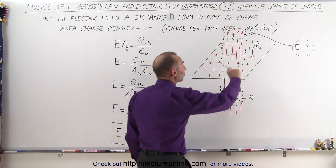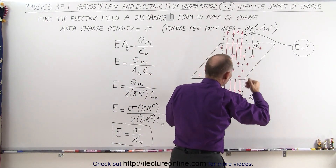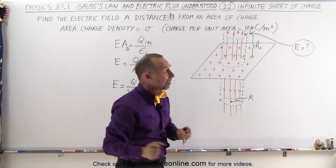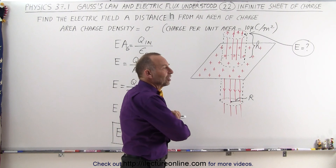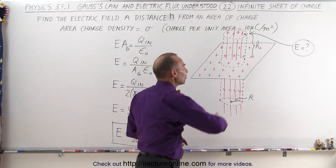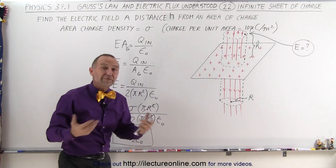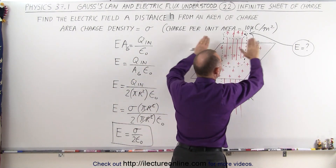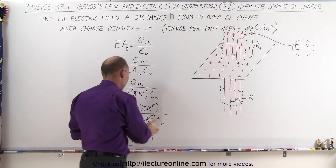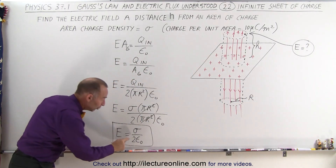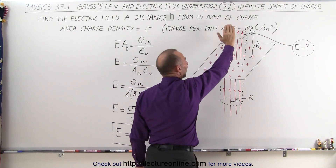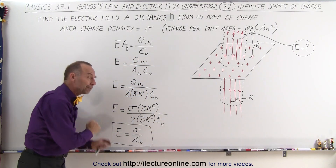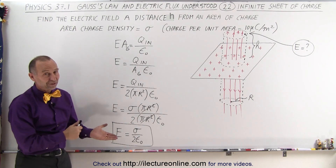This holds provided the sheet is effectively infinite relative to your distance. If the sheet is small and you're a mile away, it won't look infinite and the formula won't work. But if the sheet extends 10 million miles and you're only a mile away, it still looks infinite from your vantage point. It's all dependent on h being small relative to the sheet's size. The factor of two in the denominator comes from the electric field going both up and down from the sheet of charge.